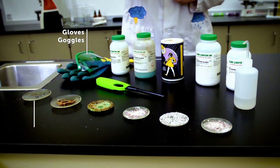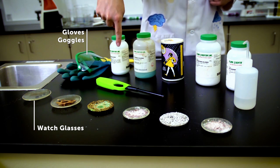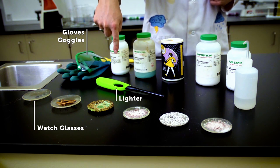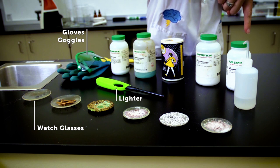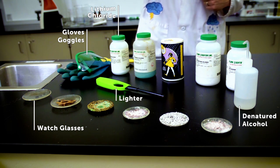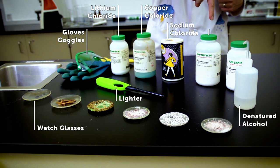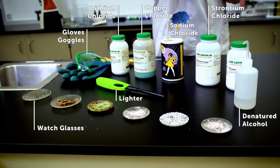You'll also need some watch glasses to hold the chemicals. You'll also need a source of ignition so we have a lighter, a fuel source, denatured alcohol, and our chemicals are lithium chloride, copper chloride, sodium chloride or salt, strontium chloride, and potassium chloride.